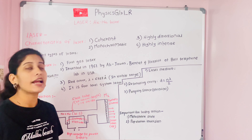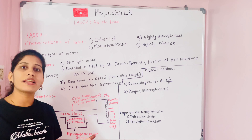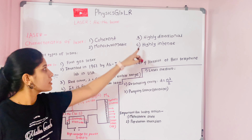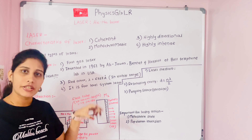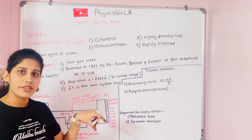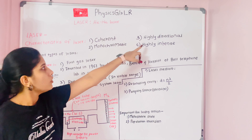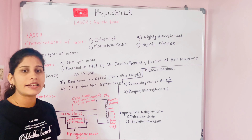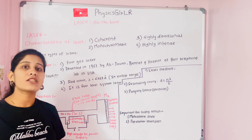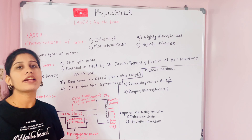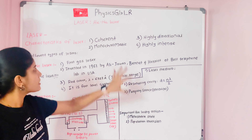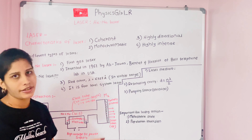The next characteristic is high directionality. Laser light covers a large distance and travels in only one direction — it is a bundle of photons all moving in the same direction. After that, there is high intensity: laser light is highly intense compared to ordinary light sources. These are the four main characteristics of laser light.